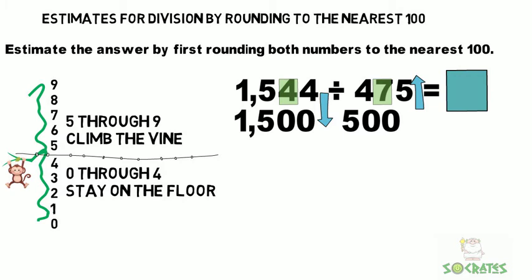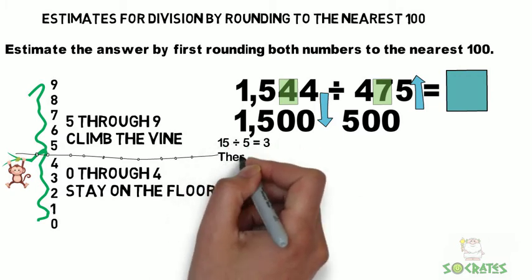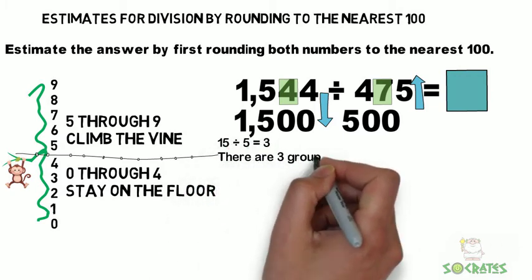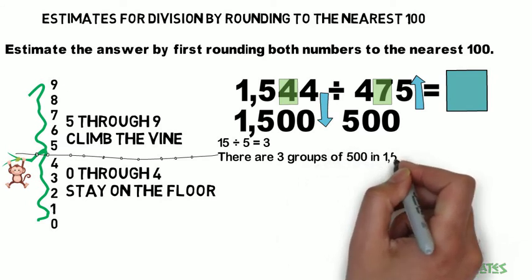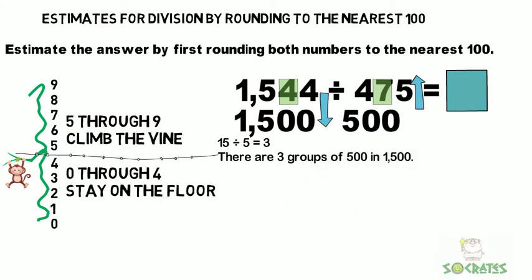Then it's really easy to divide 15 by 5. That equals 3. There are 3 groups of 500 in 1,500.